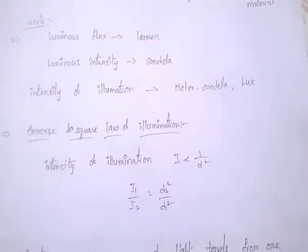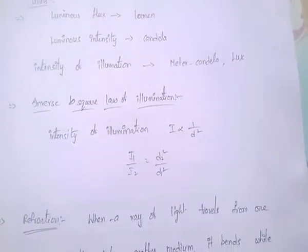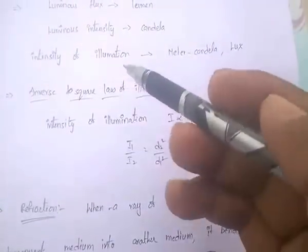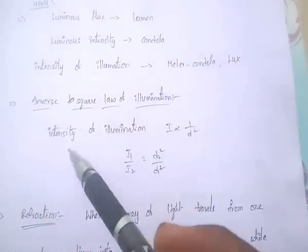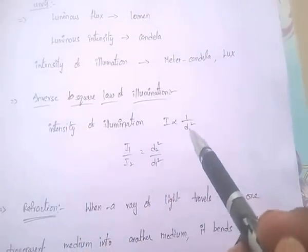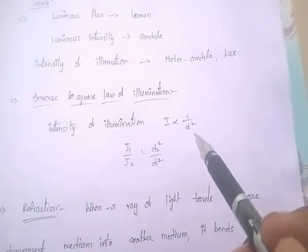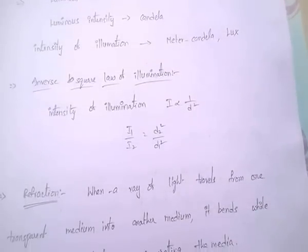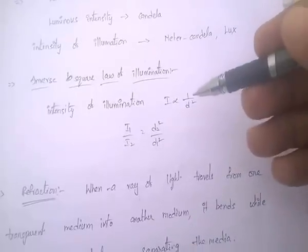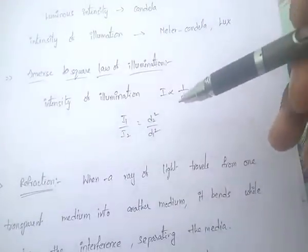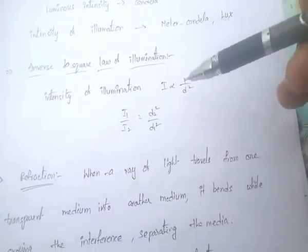Next is the inverse square law of illumination. According to this law, intensity of illumination I is proportional to 1 by D square — that is, intensity of illumination is inversely proportional to the square of the distance. The relation is I1 by I2 equal to D2 square by D1 square.